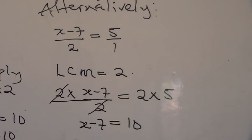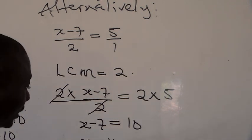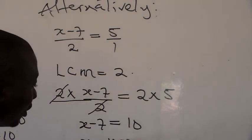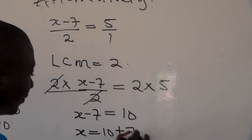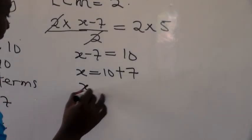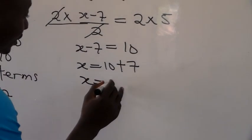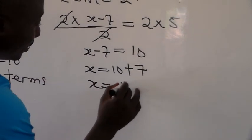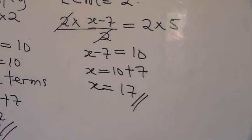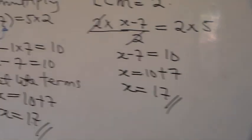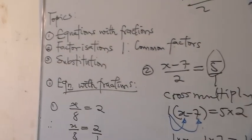From x minus 7 equals 10, we collect like terms: x equals 10 plus 7, so x equals 17. These are the two methods we can use to solve equations involving fractions.